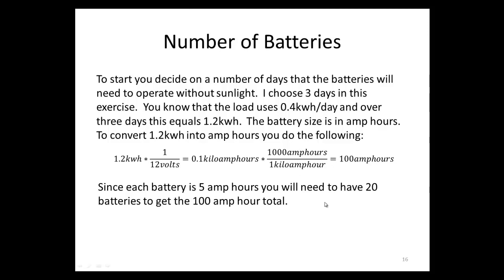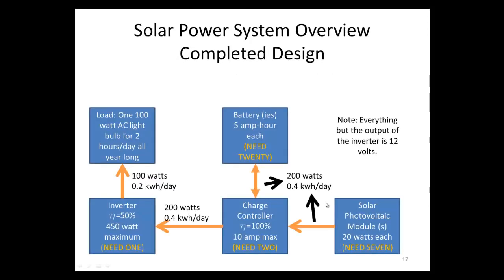We're now finished with our solar power system calculations. To summarize: we need 1 inverter, 2 charge controllers, 20 batteries, and 7 solar modules. The next step would be to see how expensive this system would be, and I'll leave that as an exercise for you.